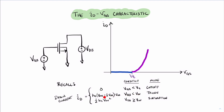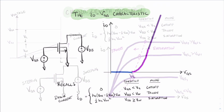Looking carefully at the triode equation, the term Kn·VOV·VDS, when the VDS is distributed in, is actually linear. Therefore, once we reach the triode region, the equation no longer goes up by a square — it increases linearly.